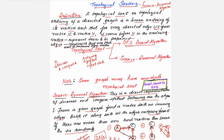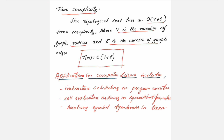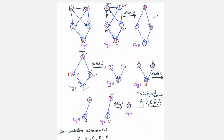There is one more method for topological sorting — the DFS-based algorithm — which will be explained in the next session. The time complexity of topological sort is O(V + E), where V is the number of graph vertices and E is the number of graph edges. Applications in computer science include instruction scheduling in program execution, cell evaluation ordering in spreadsheet formulas, and resolving symbol dependencies in linkers.